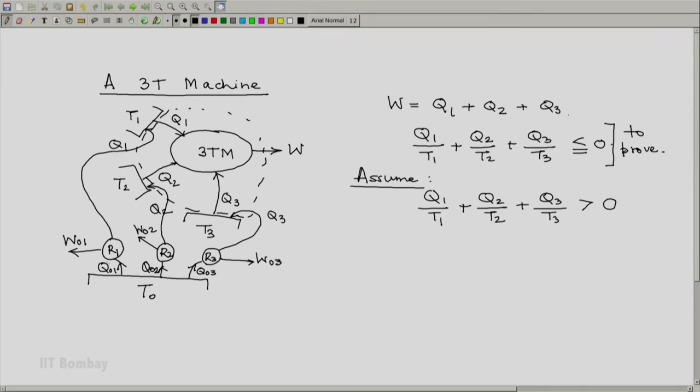Now, remember R1, R2, R3 are not necessarily engines. If, for example, T1 happens to be lower than T0 and Q1 is positive, then R1 will be an engine. In other cases, it could be a refrigerator. The signs of W, Q1, and Q01 will appropriately change, but our symbolism is as indicated.